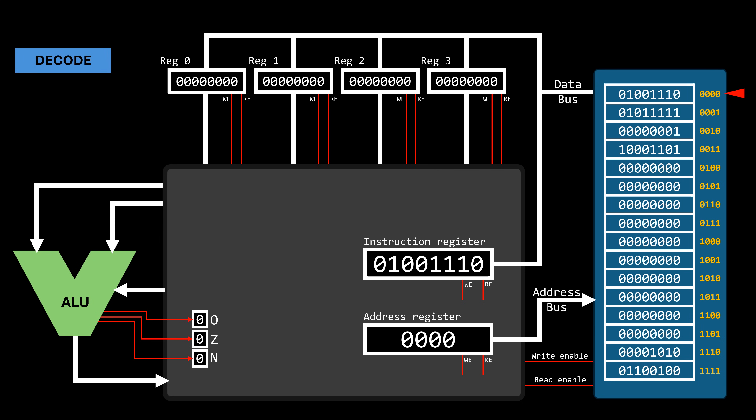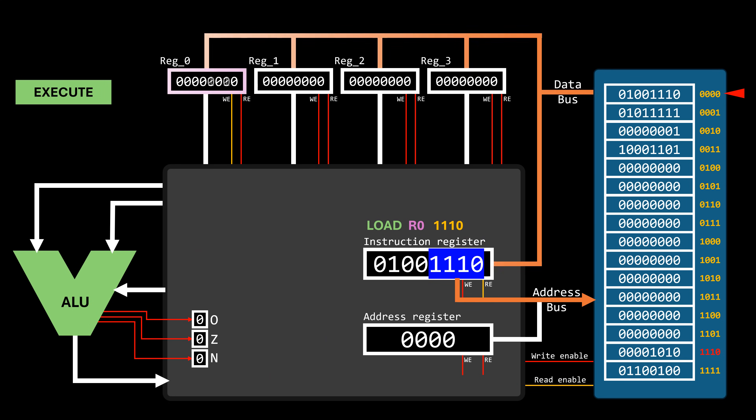Then comes the decode stage. The outputs of the instruction register are inputs for all the internal components of the control unit. In this step, the internal circuitry reads and interprets the bit sequence in the instruction register in order to send the necessary signals to all components needed to execute that specific instruction. And once everything is set up, the CPU can execute the instruction — in this example, copying the value from memory location 14 to register 0. This is known as the execute stage.